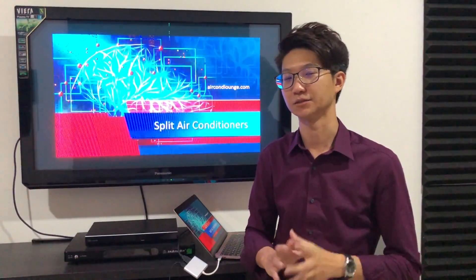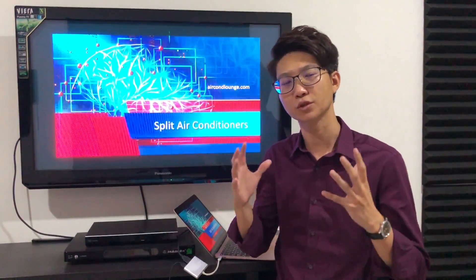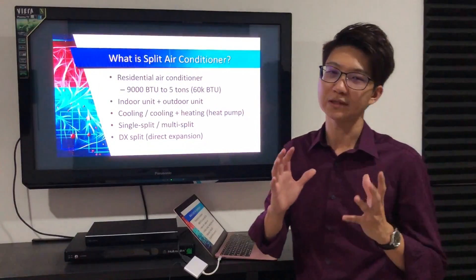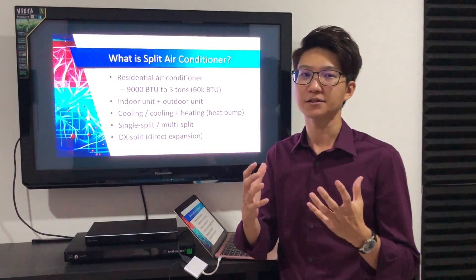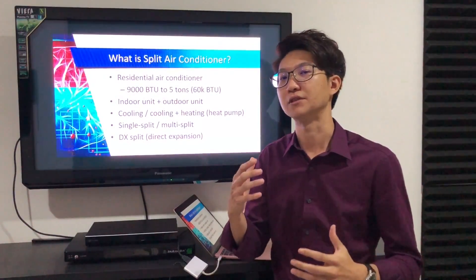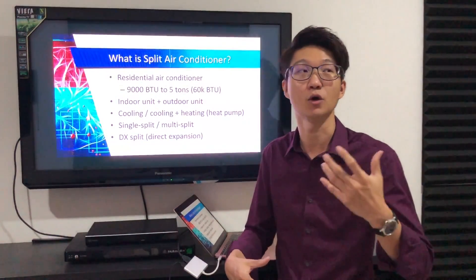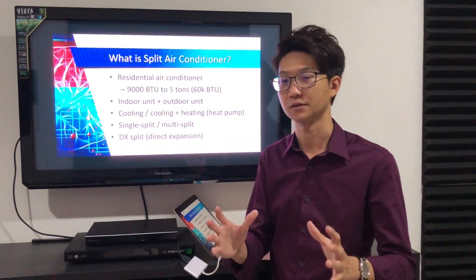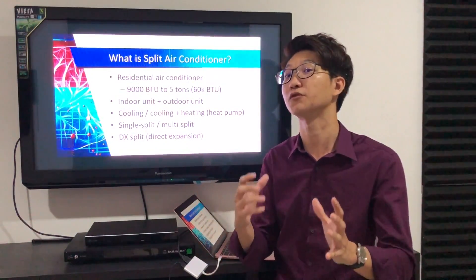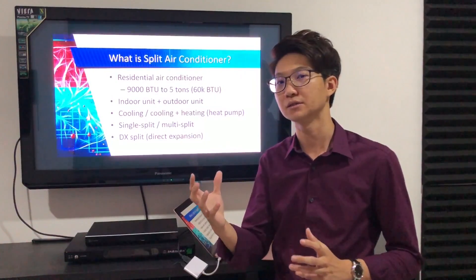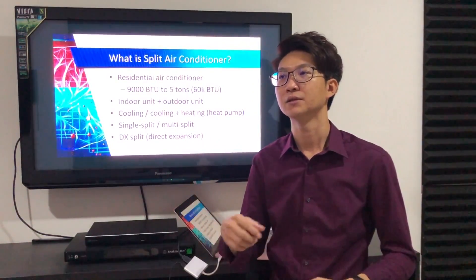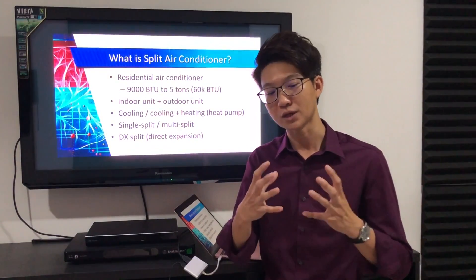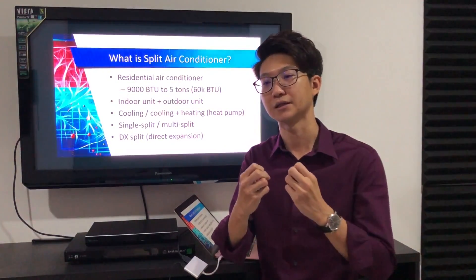There are many types of air conditioner, but today we are going to talk about the most common type — the split air conditioner. Split air conditioners are most commonly used in residential applications, like home air conditioners. Their capacity is usually on the low side, around 9,000 BTU up to 5 ton. The 5-ton unit is about 60,000 BTU — those are for what we call the centralized split air conditioner, where one 5-ton unit supplies the whole house.